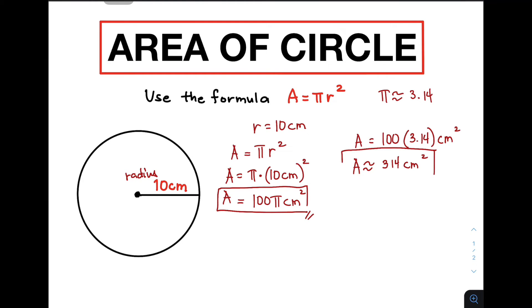So, these are the possible answers in the first problem. We use the approximation symbol because the value of pi, which is 3.14, is an approximate value.